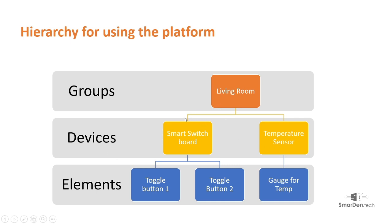For example, let's say I create a group called 'Living Room'. Then I can attach different devices to that group. In this figure you can see a smart switchboard assigned to the living room, and a temperature sensor also assigned to the living room. So the living room is a group containing two devices: one is the switchboard and the second is a sensor.